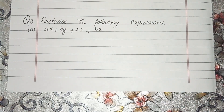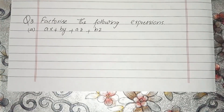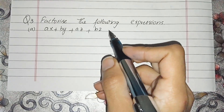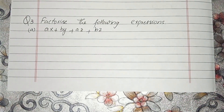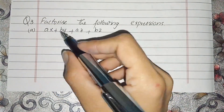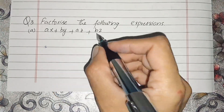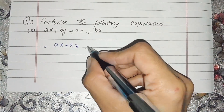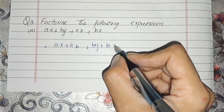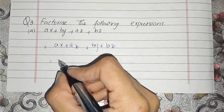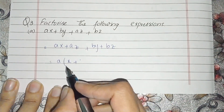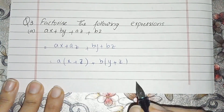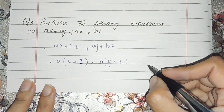Now students, question number 3: factorize the following expressions. If we observe here, we have four terms. We split into two groups of two terms and check what is common in each group.